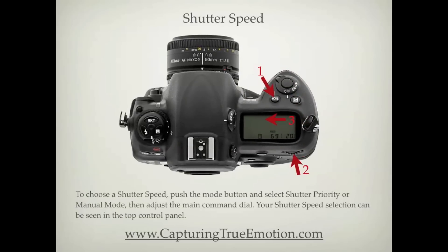To choose a shutter speed, push the mode button and select shutter priority or manual mode, then adjust the main command dial. Your shutter speed selection can be seen in the top control panel.